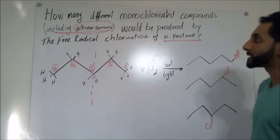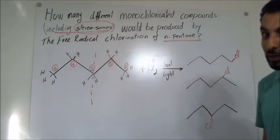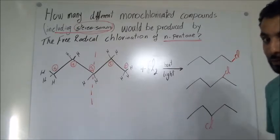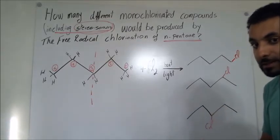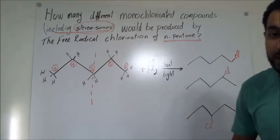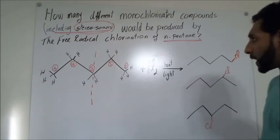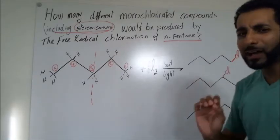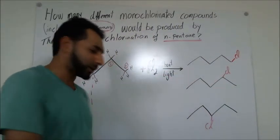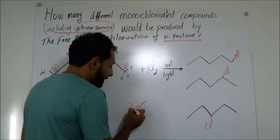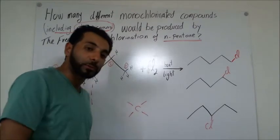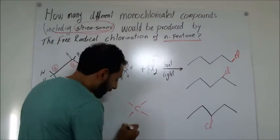But remember, we discussed stereoisomers — different compounds with the same connectivity and molecular formula but different orientation of atoms in space. So I need to look for chiral centers. A chiral center is a carbon that has four different groups attached to it.